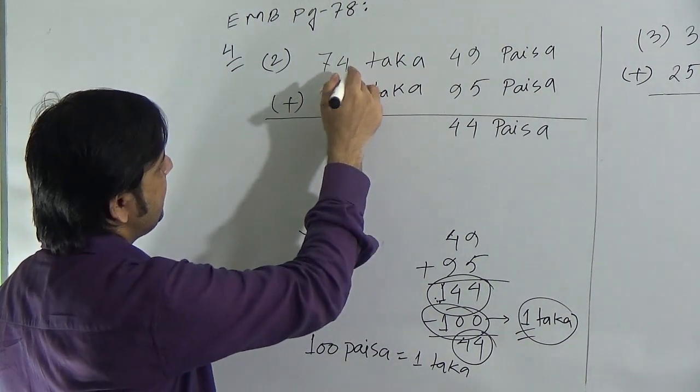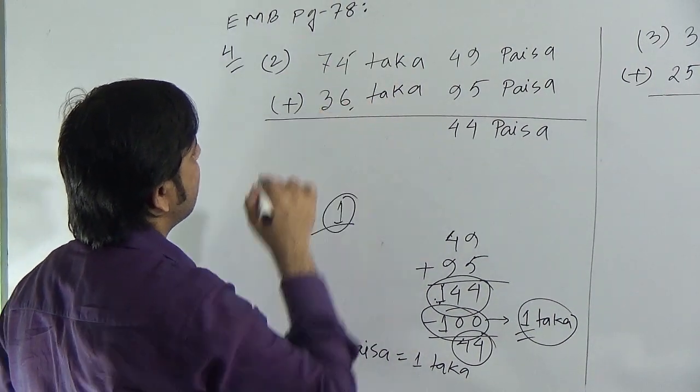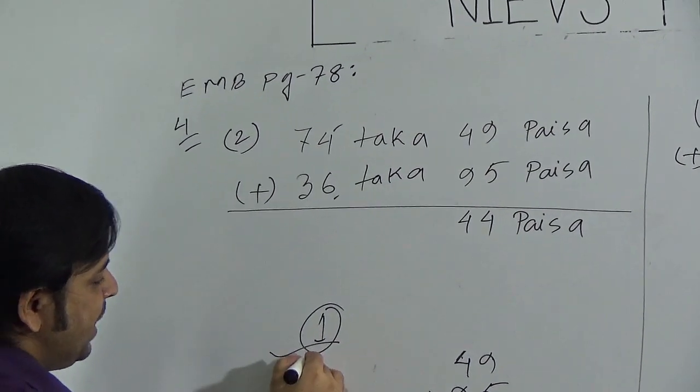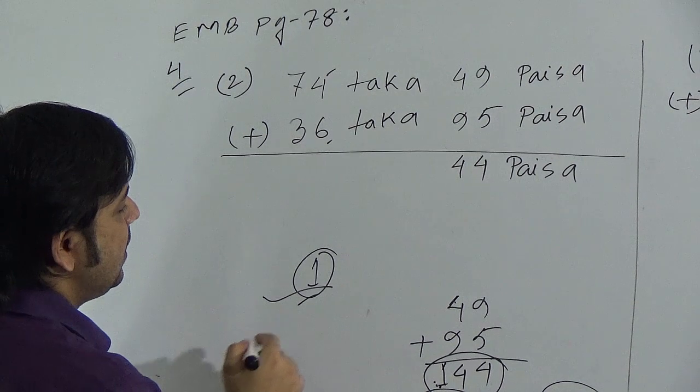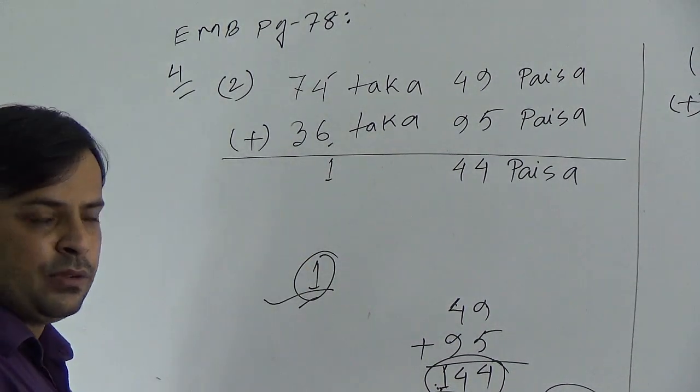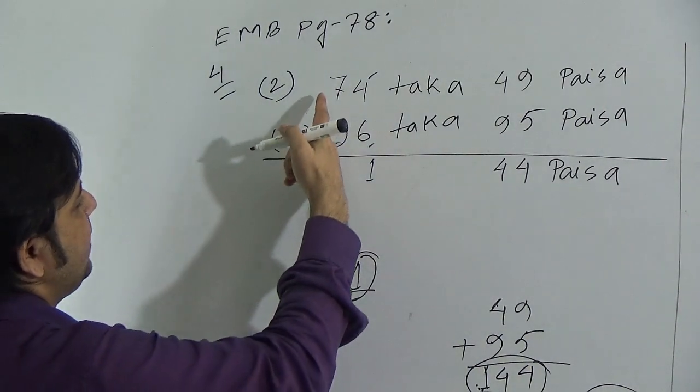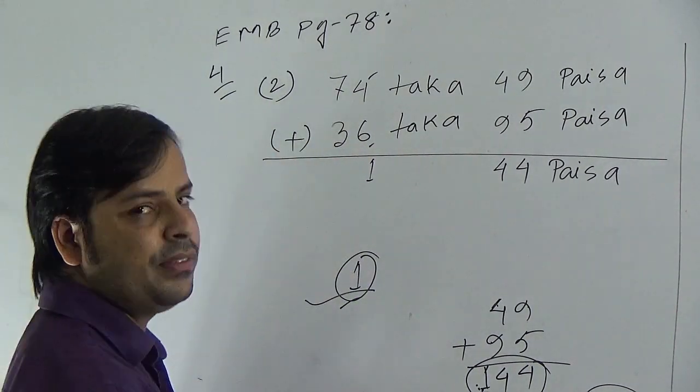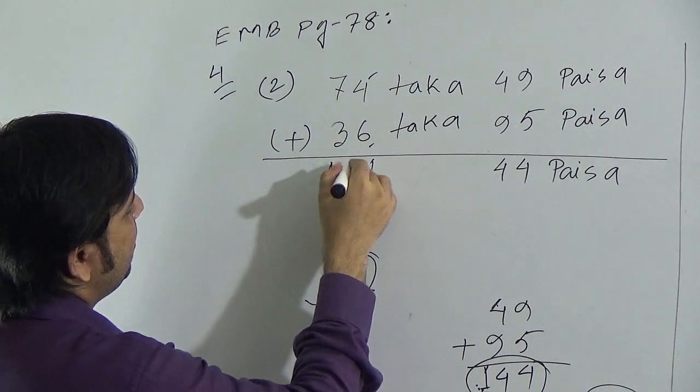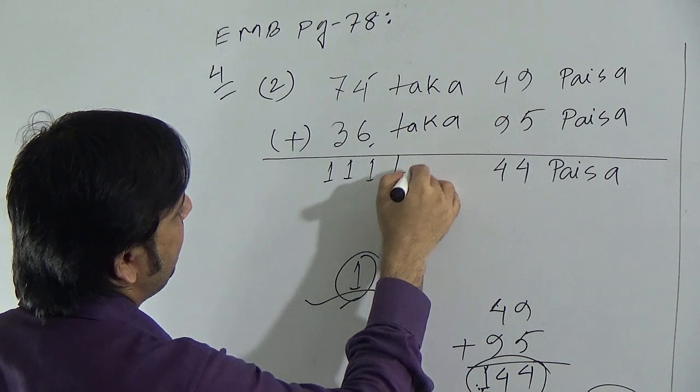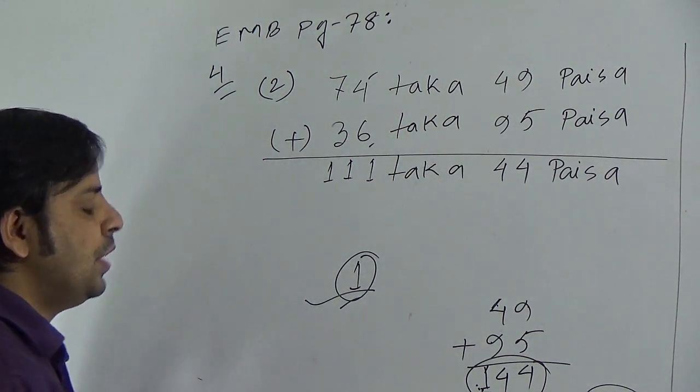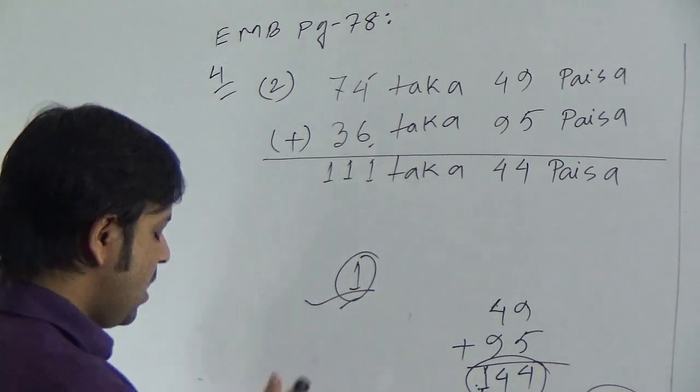So at first do the addition here. Here is 4 and 6, that is 10. And remaining 1 taka is 11. So we have to write here 1. Remaining 1. Now add 7 and 3. This will be 10, and remaining 1 will be 11. So we can write 111 taka 44 paisa. This is our sum.